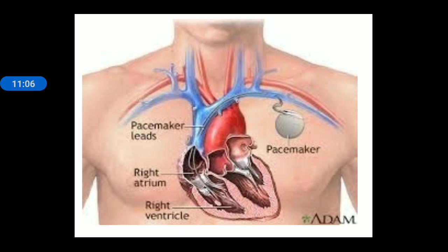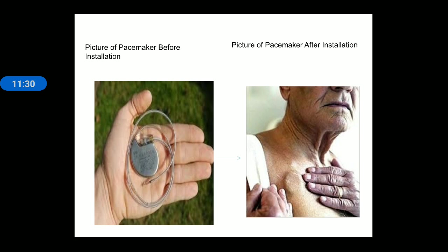The SA node is our pacemaker. Sometimes the SA node may be injured or defective, so an artificial pacemaker can be introduced in the SA node area. You can see the pacemaker lead and pacemaker device inserted inside the human body. This is the picture of the pacemaker before installation, and after installation you can see a circular device placed under the skin of a person.